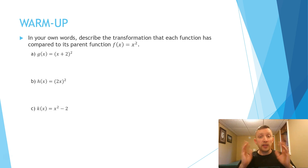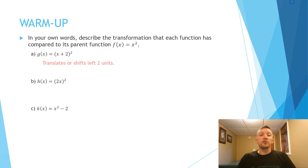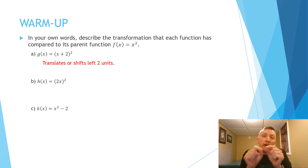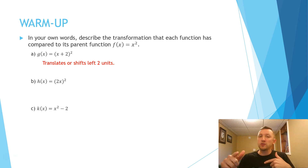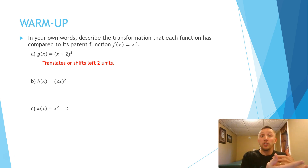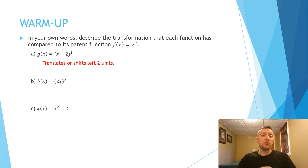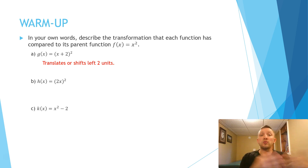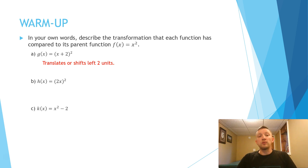Did you get to dust off those cobwebs and remember what you did in the previous video? Let's check. For this first one, where we have x plus 2 squared, any time that we have something happening directly with the x, we're going to do the opposite of what we would expect. It's in the form of x minus h, and since it's x plus 2, h is negative 2, so it's going to be moving to the left two units.